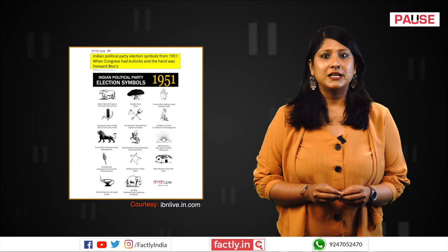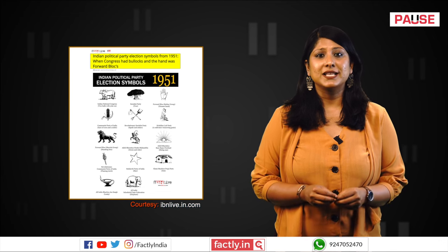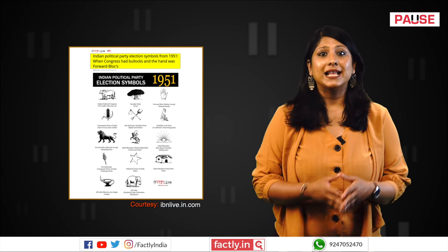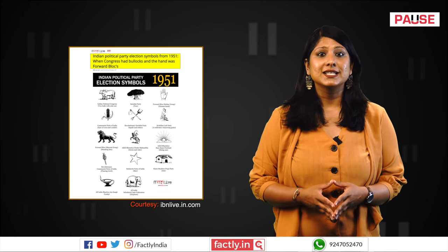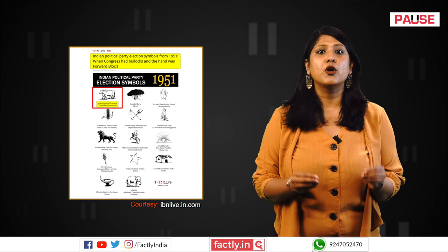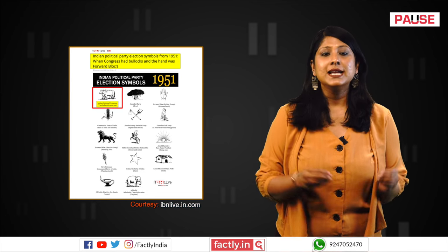Following India's independence, the inaugural general elections took place in 1951–52. At the time, the Congress, led by Jawaharlal Nehru, participated with the symbol of a pair of oxen carrying the yoke.